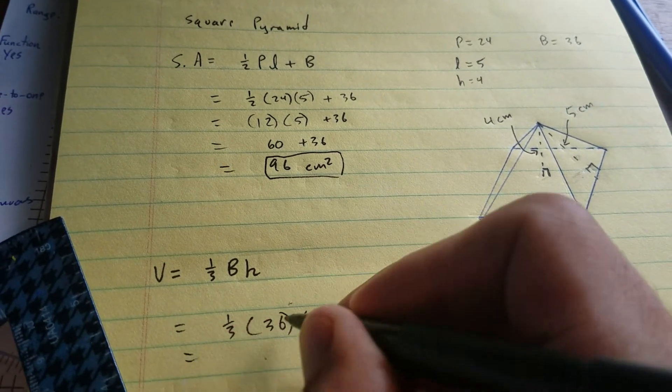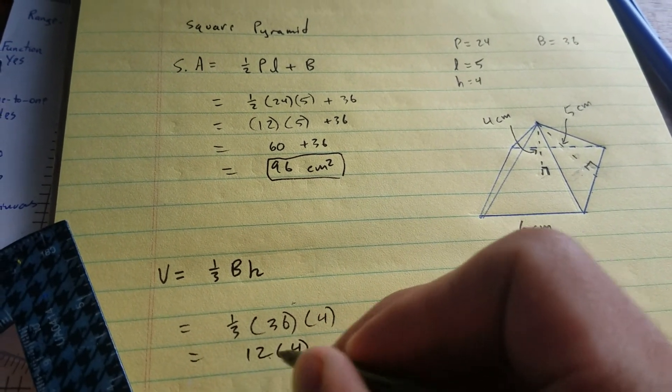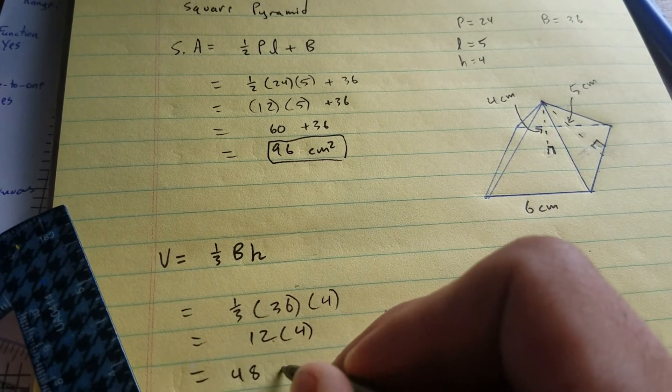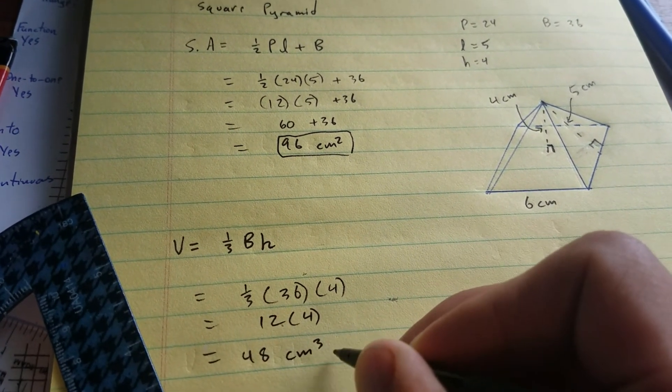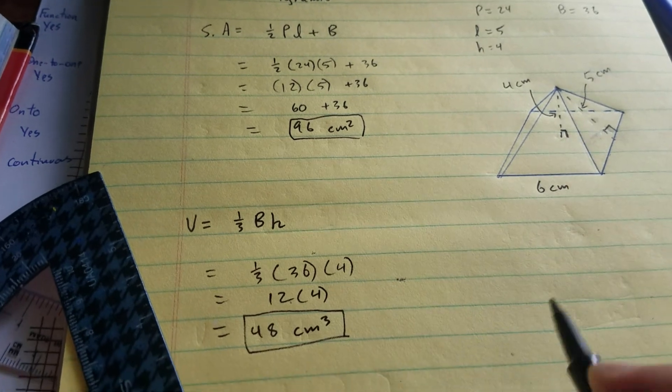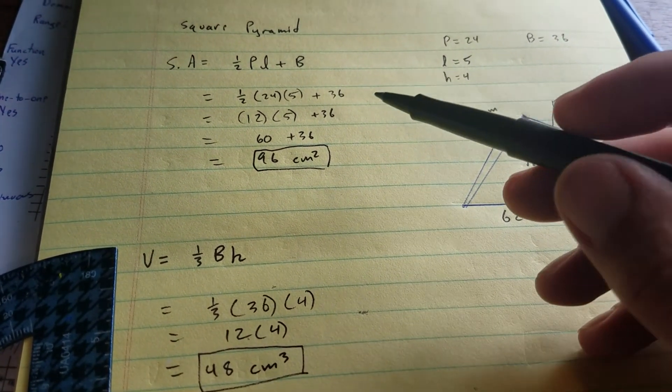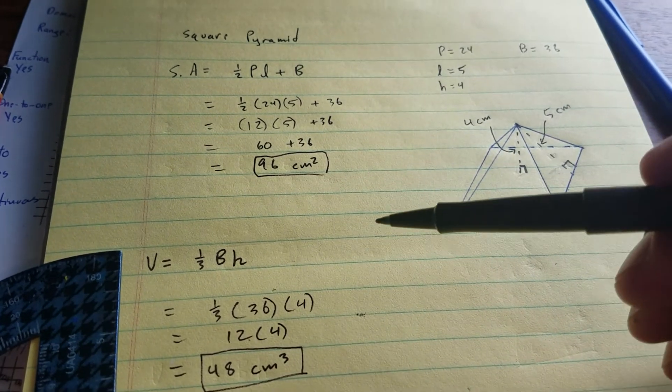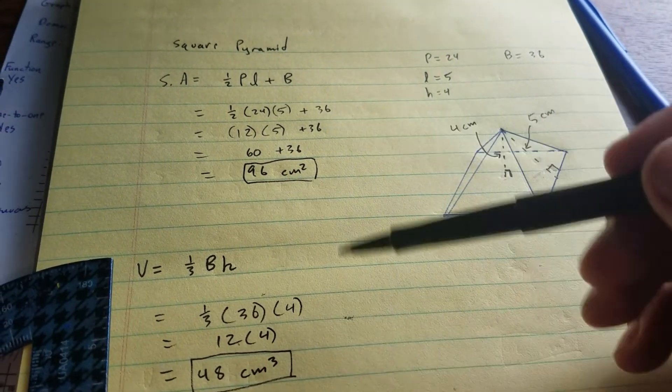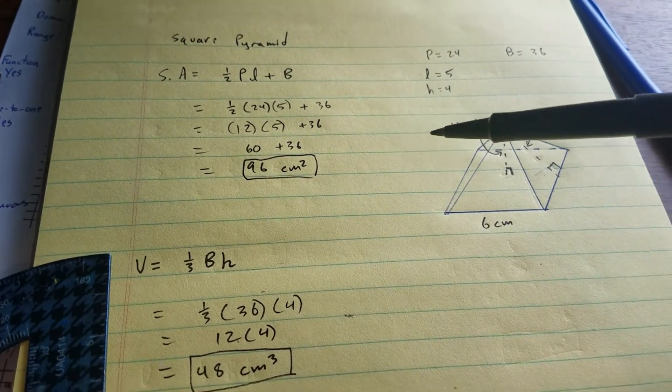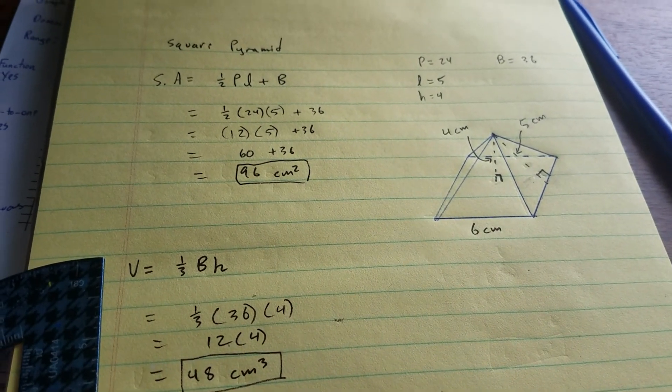A third of 36 is 12 times 4, that's 48 centimeters cubed. As long as you're showing your work, there is more than one way to solve for surface area and volume. I'm just showing these two because they're in the book and they're straightforward and easy to use.